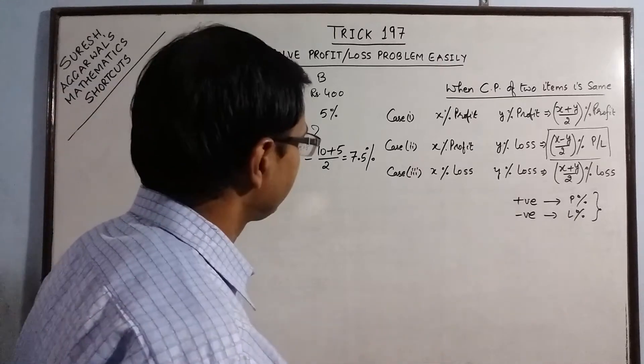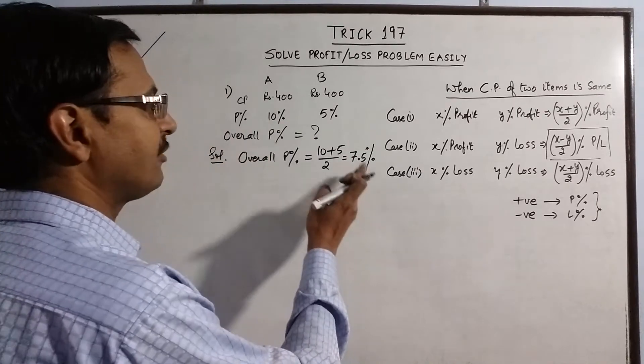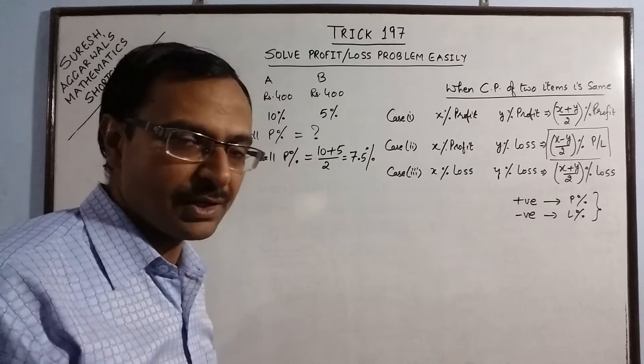Now, if you need to calculate 7.5% of the overall profit, so you just calculate 7.5% of the total cost price, you will get the answer in Rs.